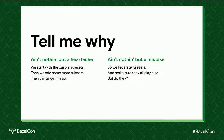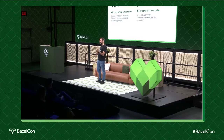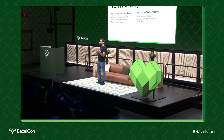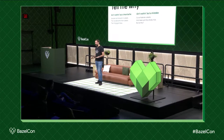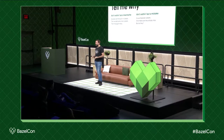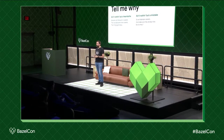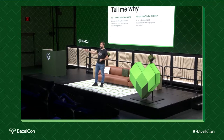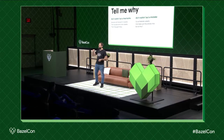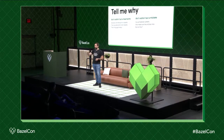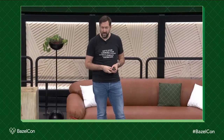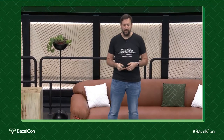People don't need to figure out whether they need Rules Docker, Rules Node.js, Rules Python, Contrib Rules JVM, Rules JVM External, or Rules Java. They just go from the federation: "give me the Java feature" or "give me the Docker feature." That's really nice.